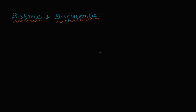For example, consider a position A. Looking at this setup, we can see a point, and from there we move to point B.